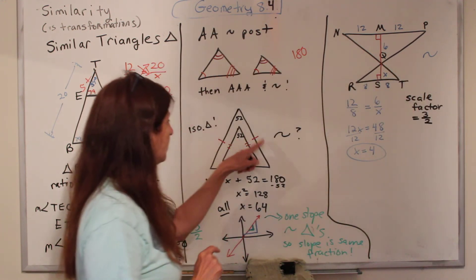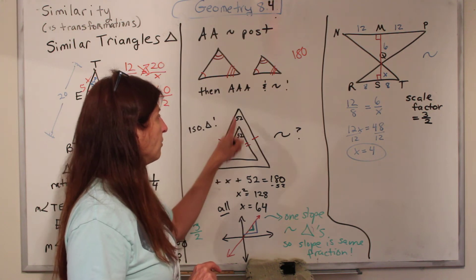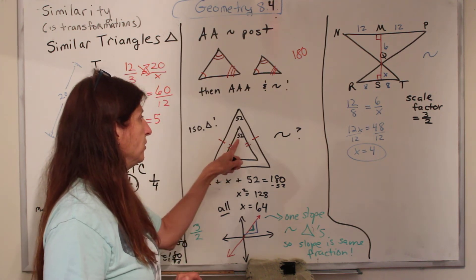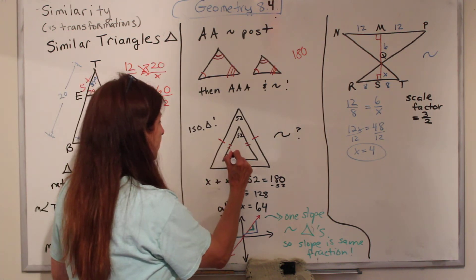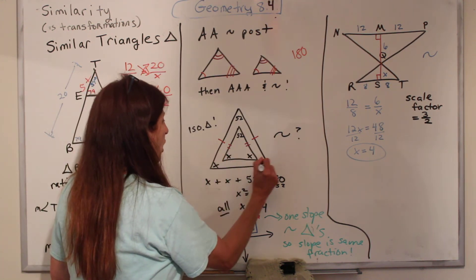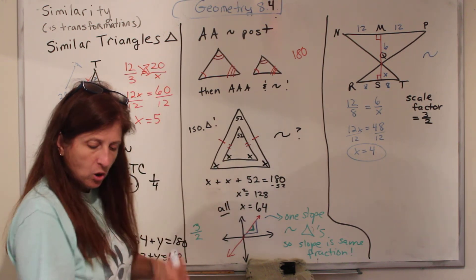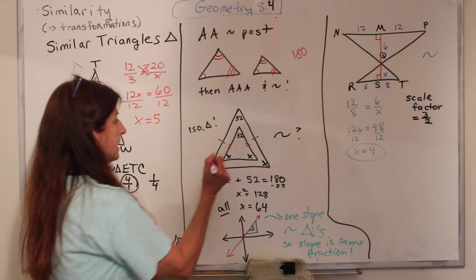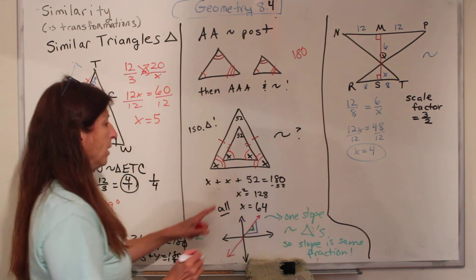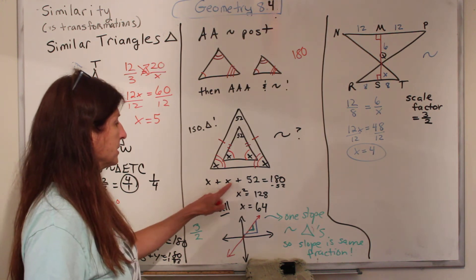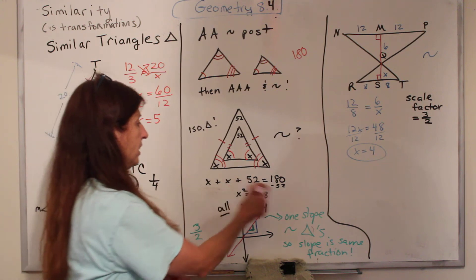Okay, here's one. We have two isosceles triangles, one inside the other one. Both of them, their apex is 52 degrees. Are they similar? Well, we know for both of them, if these are our x's, that because the sides are the same, we know, because it's isosceles, that the angles are the same. And for both of them, you have to add x plus x plus 52 equals 180.